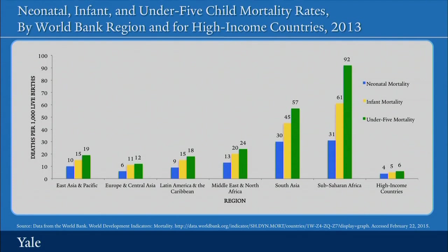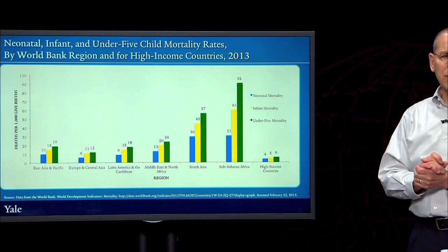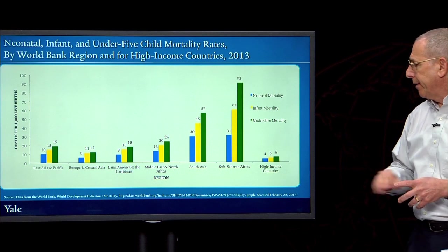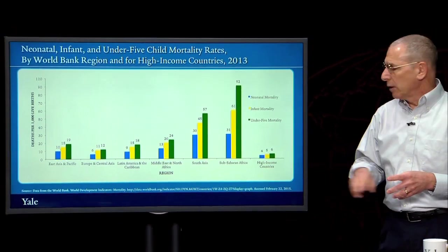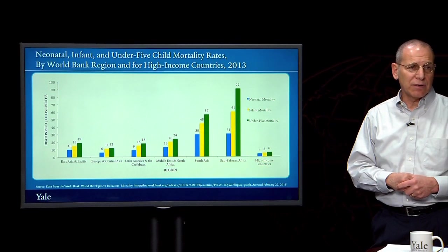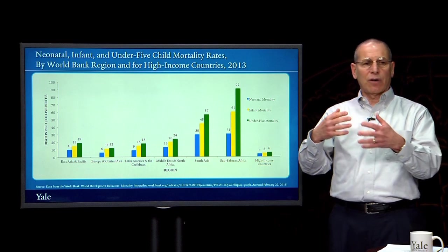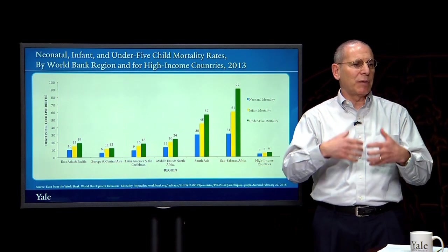In most regions you have a higher risk of dying if you're under 28 days old, but that risk gradually decreases as you reach one year and then five years of age. However, in places like South Asia and sub-Saharan Africa, the risk appears to be about equal between each of those ages. In high-income countries, for every 1,000 born, only six will die before their fifth birthday, and four of those six will die in their first 28 days.